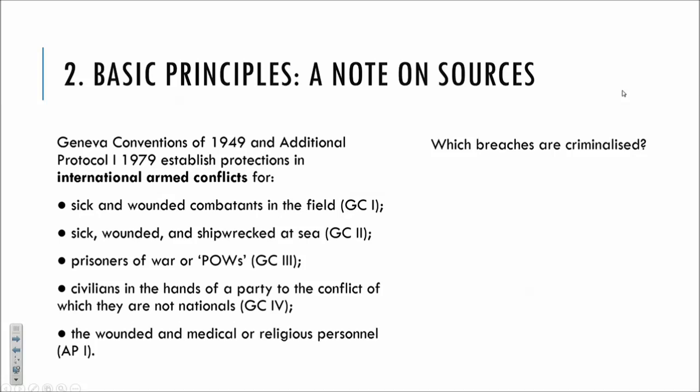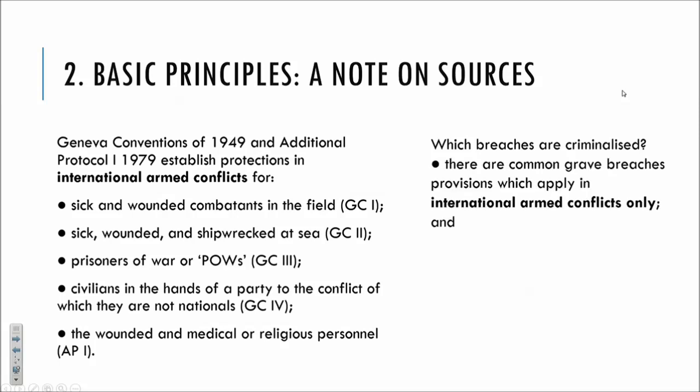Also in international armed conflicts, the wounded and medical or religious personnel have certain standards of protection — these are the categories of protected people. The question then becomes which breaches are criminalised. In respect of GC 1, 2, 3 and 4 and Additional Protocol 1, there are certain grave breaches provisions which apply in international armed conflicts only. So it's only the grave breaches of Geneva Conventions 1 through 4 that are criminal.